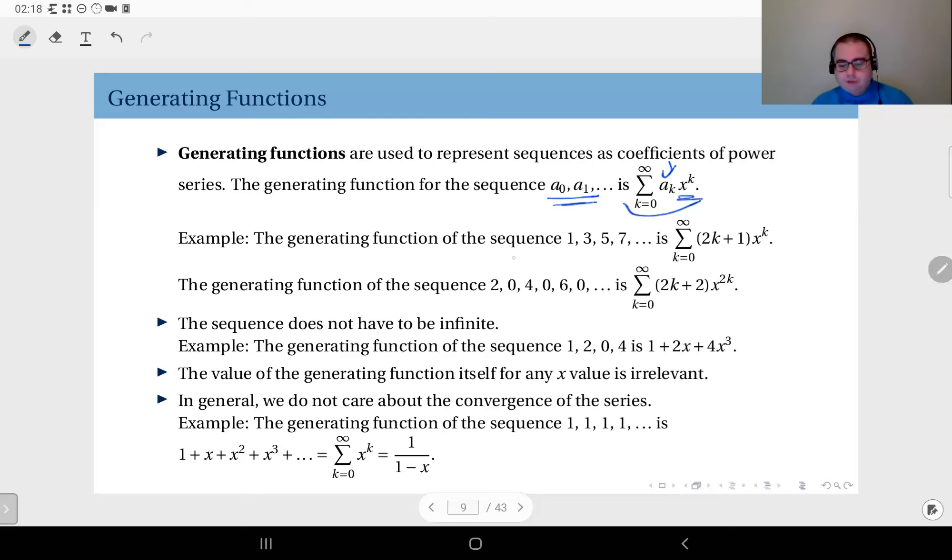Here are some simple examples. The generating function of the sequence 1, 3, 5, 7, etc., the odd numbers, is simply the sum for k equals 0 up to infinity of 2k plus 1, which are the odd numbers, times x to the power k. Another example: 2, 0, 4, 0, 6, 0, 8, 0, etc. The generating function for this sequence would be the sum of (2k+2)x^(2k).